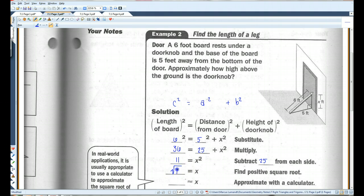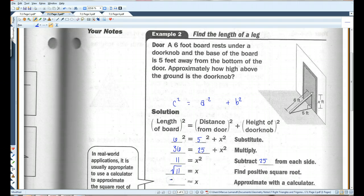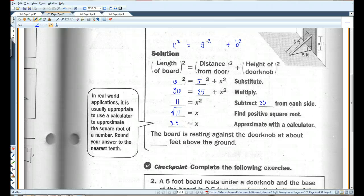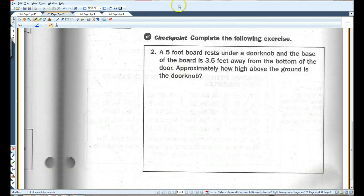So, the square root of 11 is what X is. So, let's pull out the calculator. Square root of 11 is about 3.32. Or, we'll just put 3.3. So, the board is resting against the doorknob about 3.3 feet above the ground. Alright. I'll let you guys do this one. Let's go to page 3.